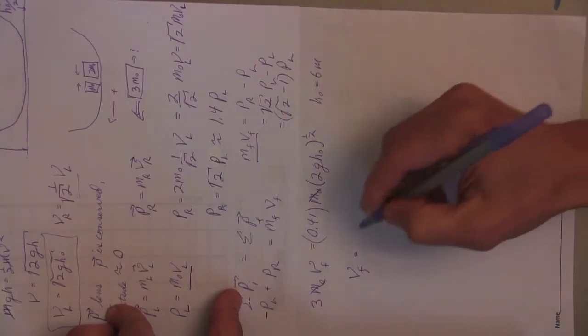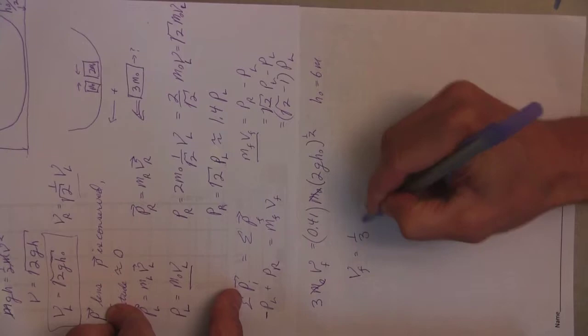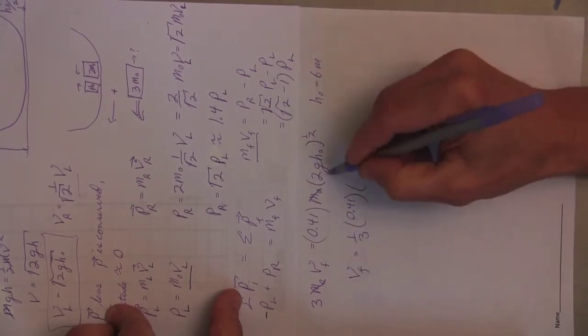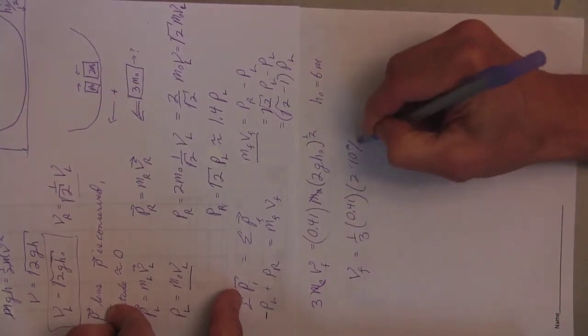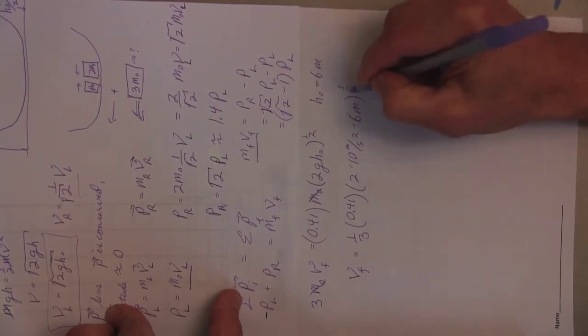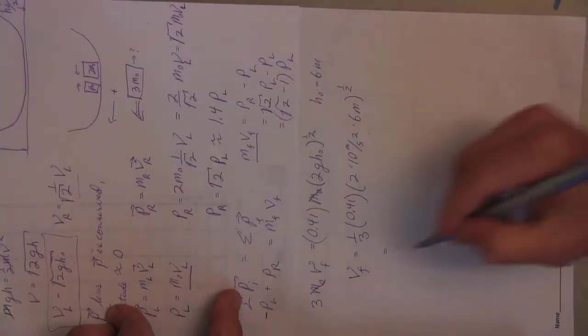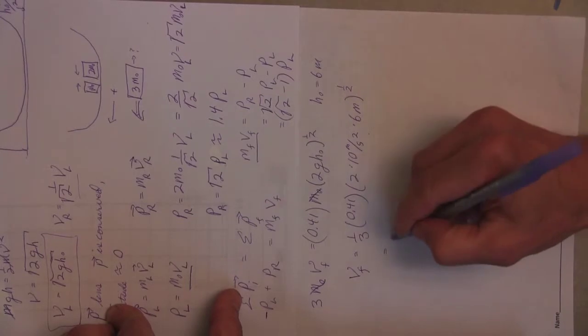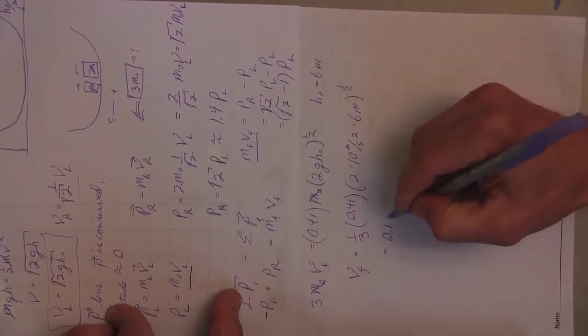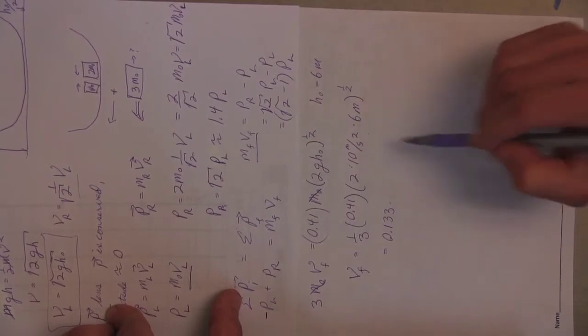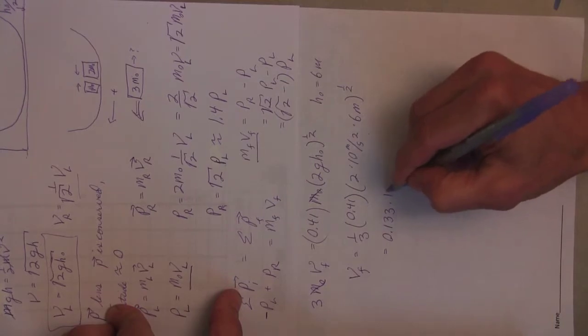So now I like this because M naught cancels and the final velocity is just 1 third times 0.41 times 2, 10 meters per second squared times 6 meters to the 1 half. So what is this? This is 0.41 divided by 3 is 0.133. And this is 20 times 6 is 120. And square root of 120 is about 11, right, because 121 is 11 squared.